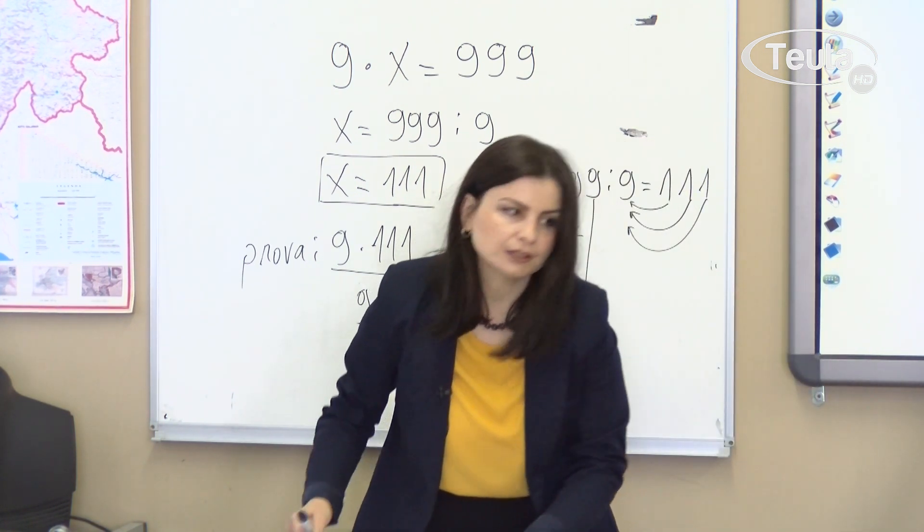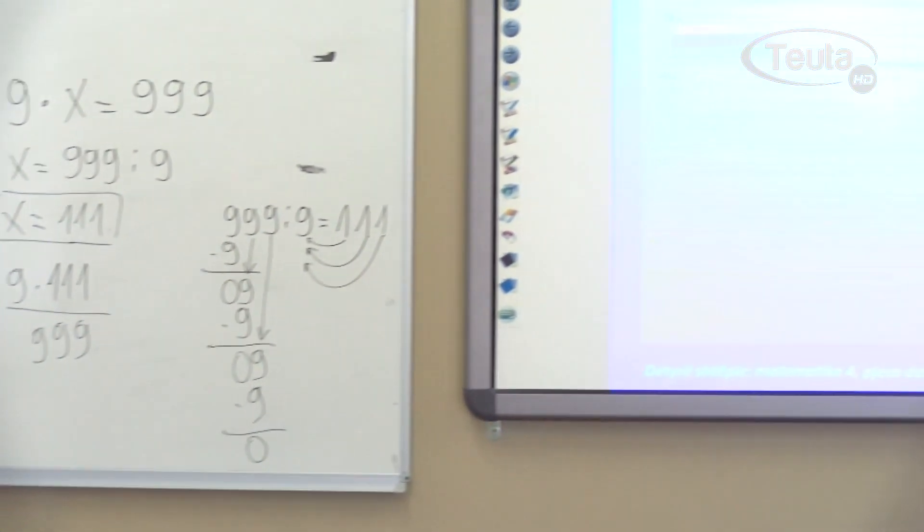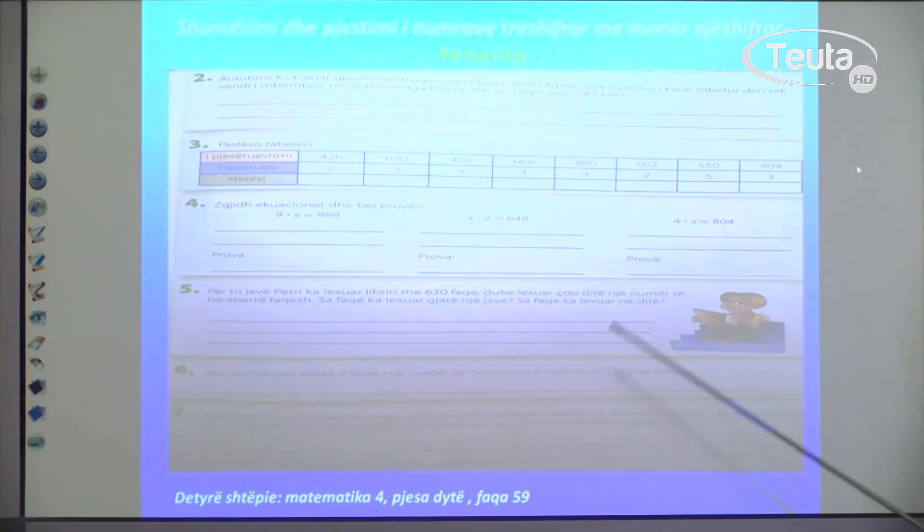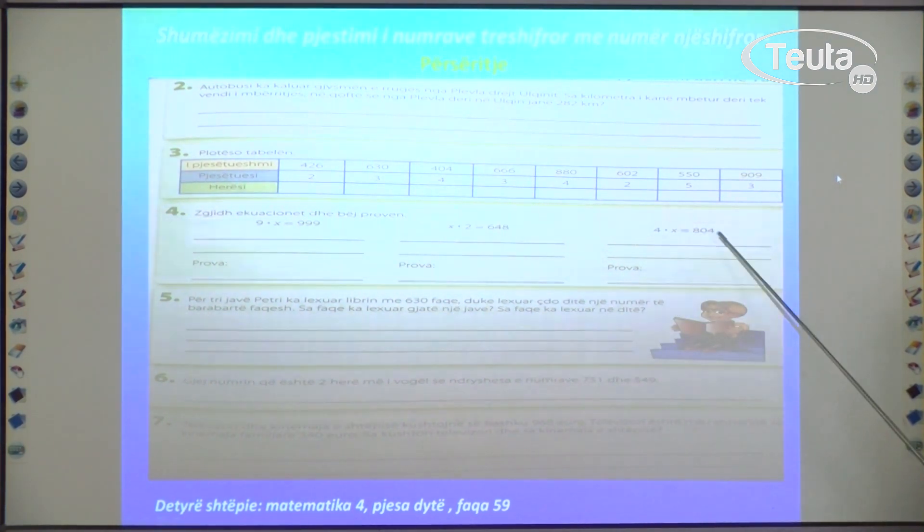Let's continue back to the textbook. At the bottom of the exercise 9 times x equals 999, you need to solve these two other exercises as well.